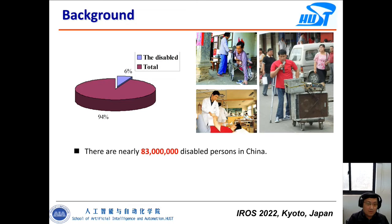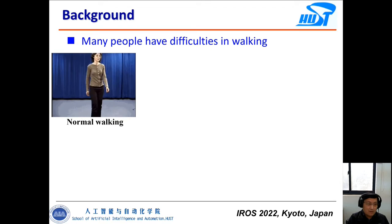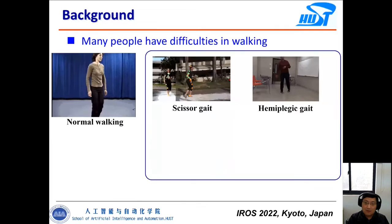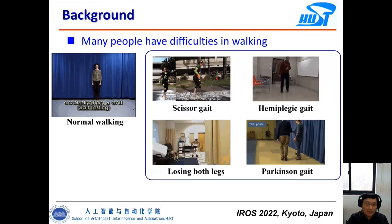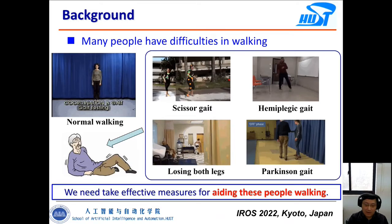More than 33 million aged people are handicapped in China. As for the disabled, there are nearly 83 million disabled persons in China and one-third of them have dysfunctions in limbs. Normal walking is one of the most important activities in human daily life, but due to diseases and accidents there are many kinds of abnormal gaits, which may cause falling down — very dangerous for elderly people. So we need to take effective measures for aiding these people in walking.